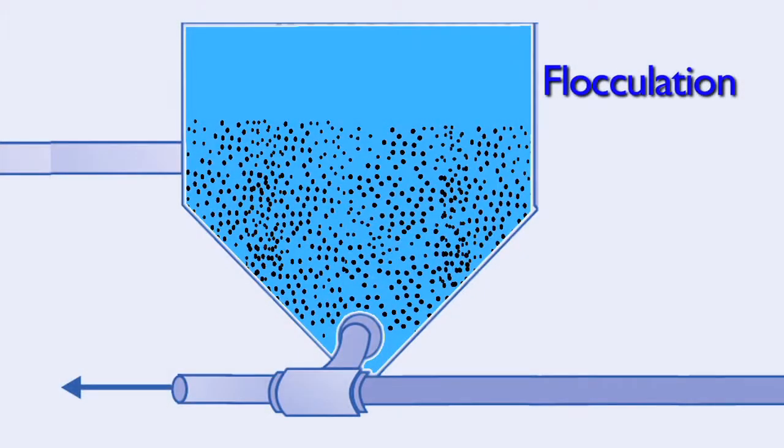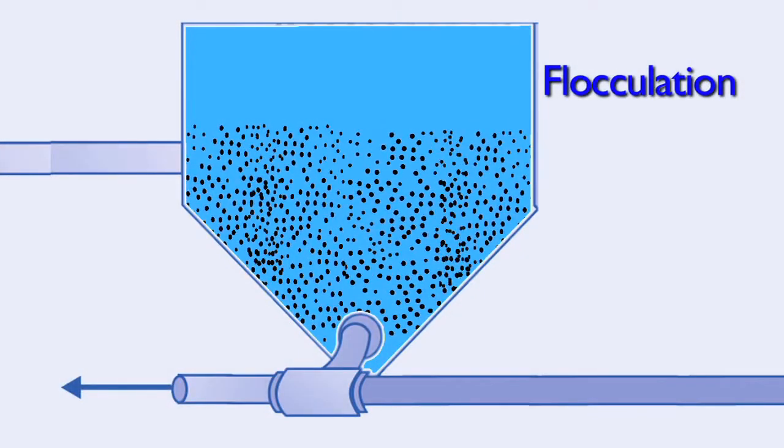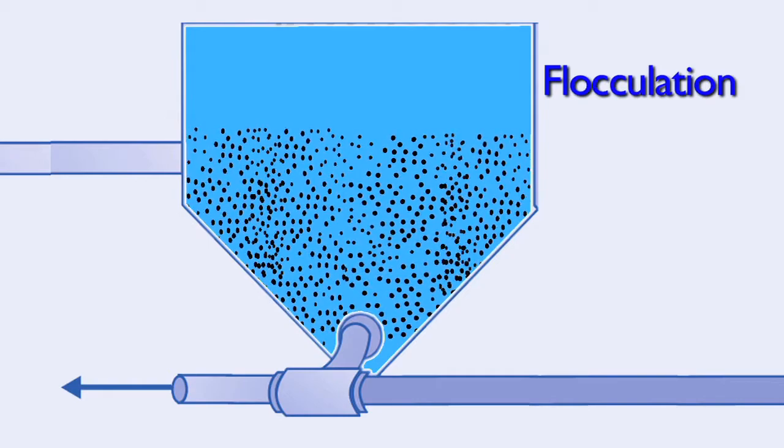If the mixing is too fast, the flocks will break apart into smaller particles that are very difficult to remove by settling or filtering.